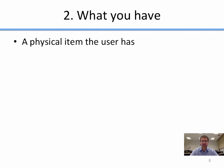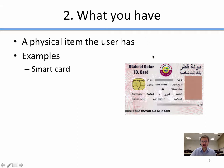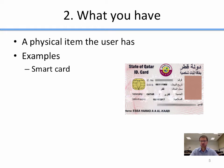The second factor of authentication is what you have — a physical item that the user has on them. A classic example is a smart card. Here in Qatar, we have smart cards for ID, and the new ones have a smart chip containing cryptographic protocols that allow the chip to authenticate with a computer. At a self-service Ministry of the Interior kiosk, you insert the ID card, and that card serves as proof of who you are just by the fact that you have it.